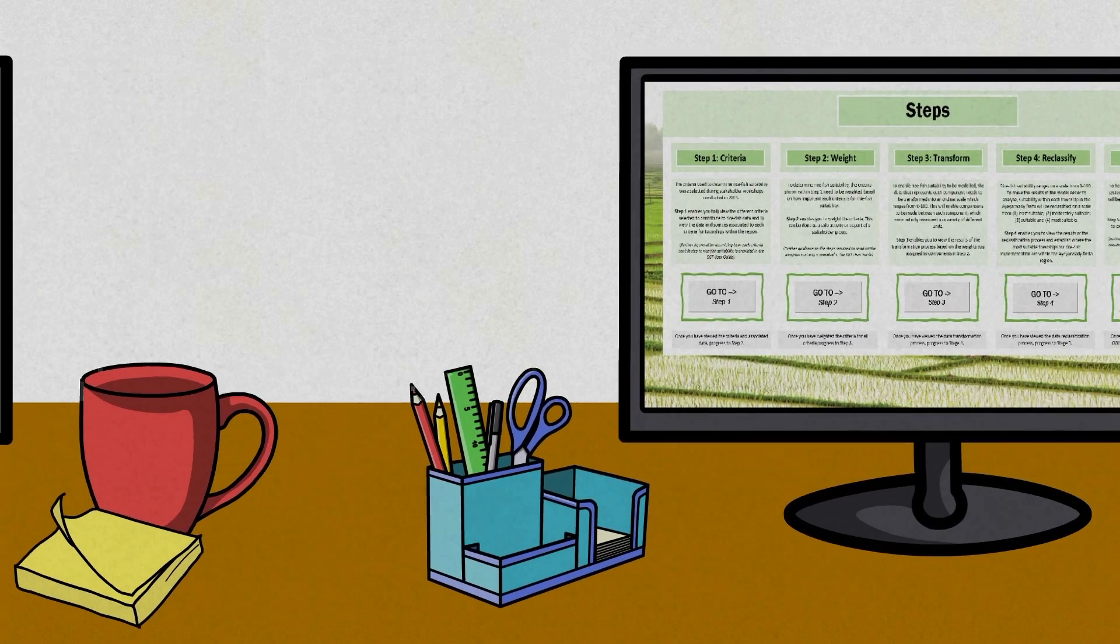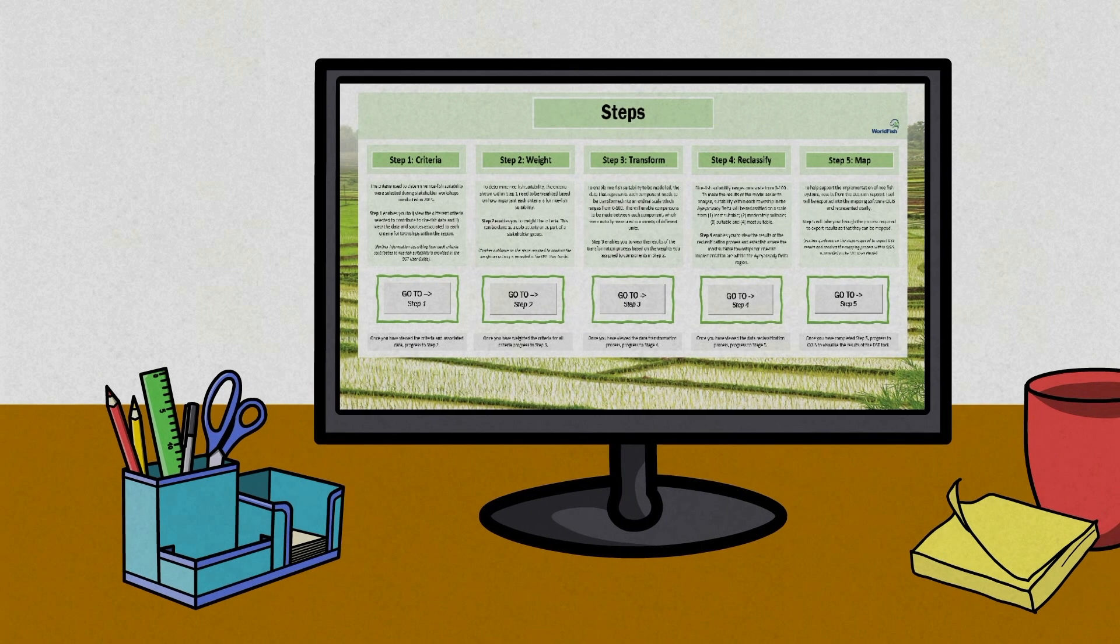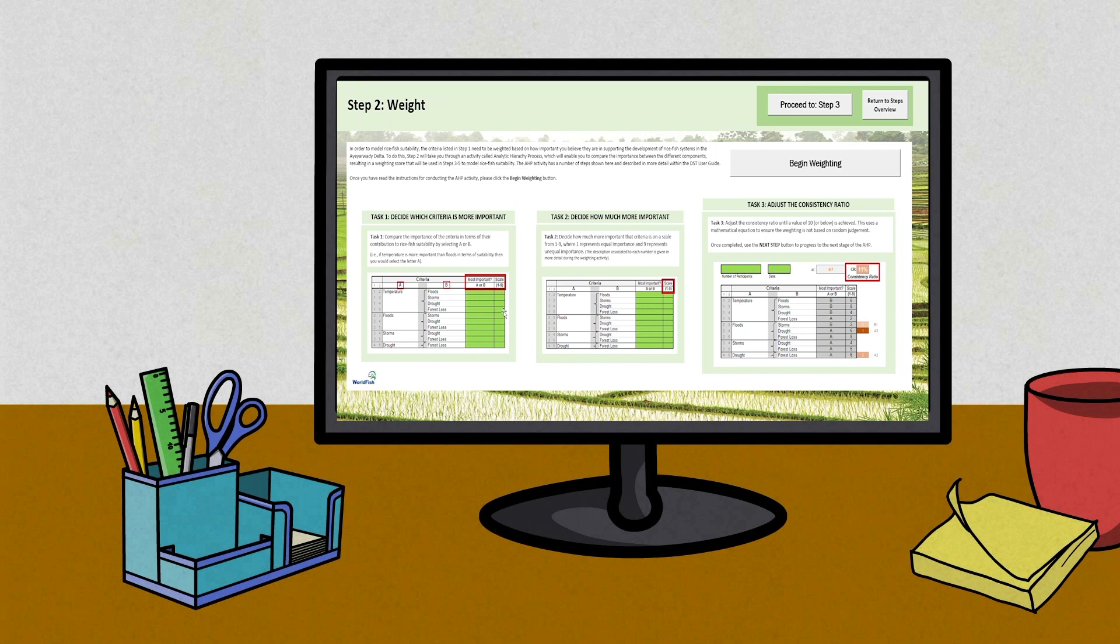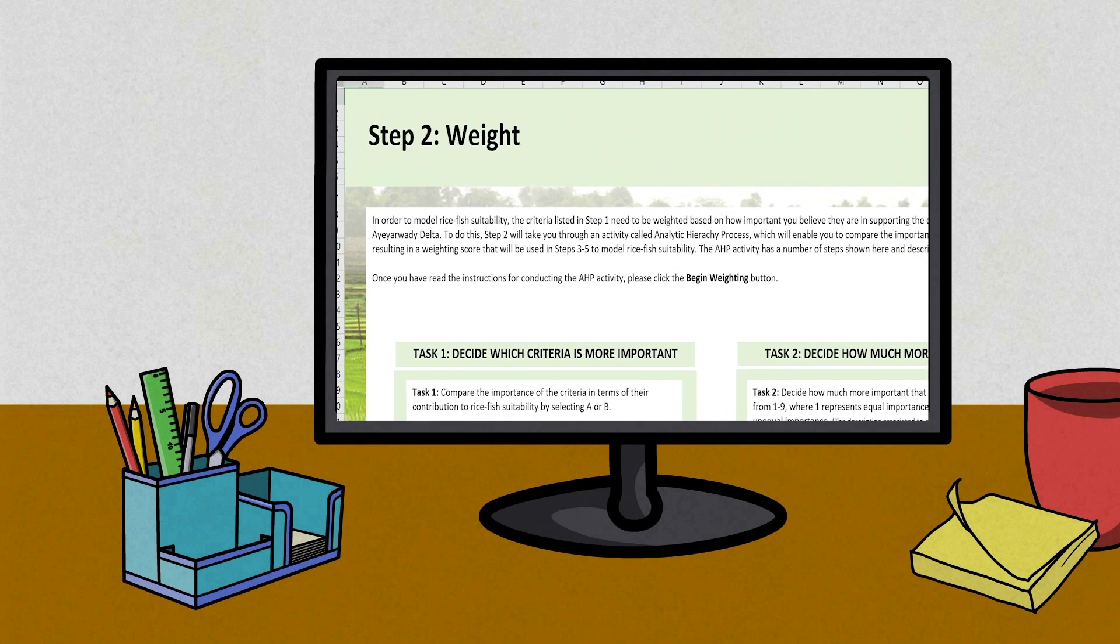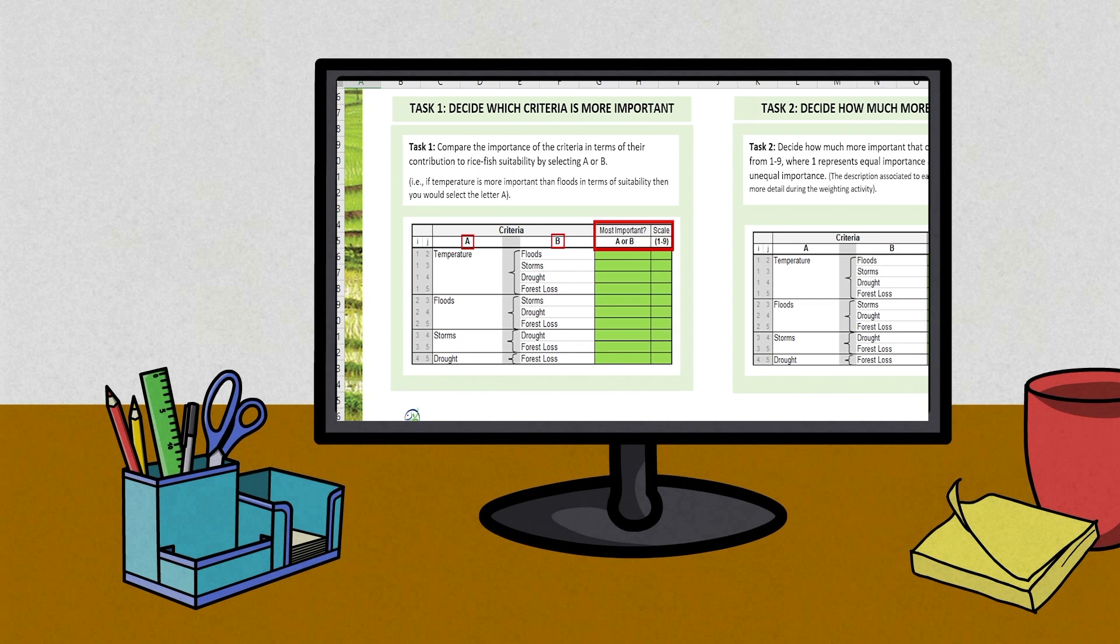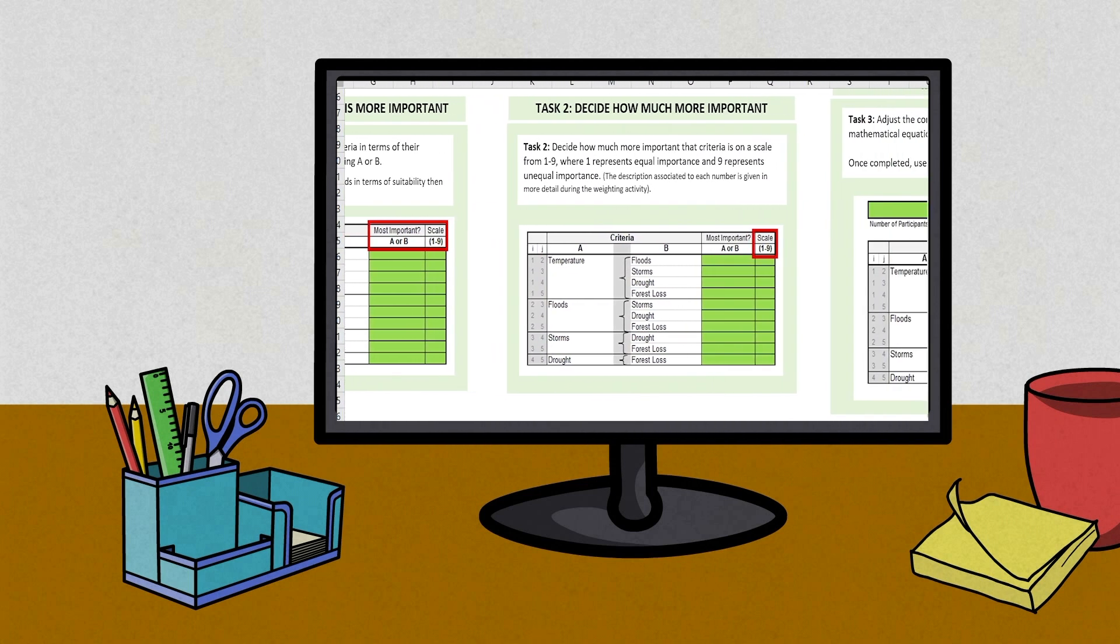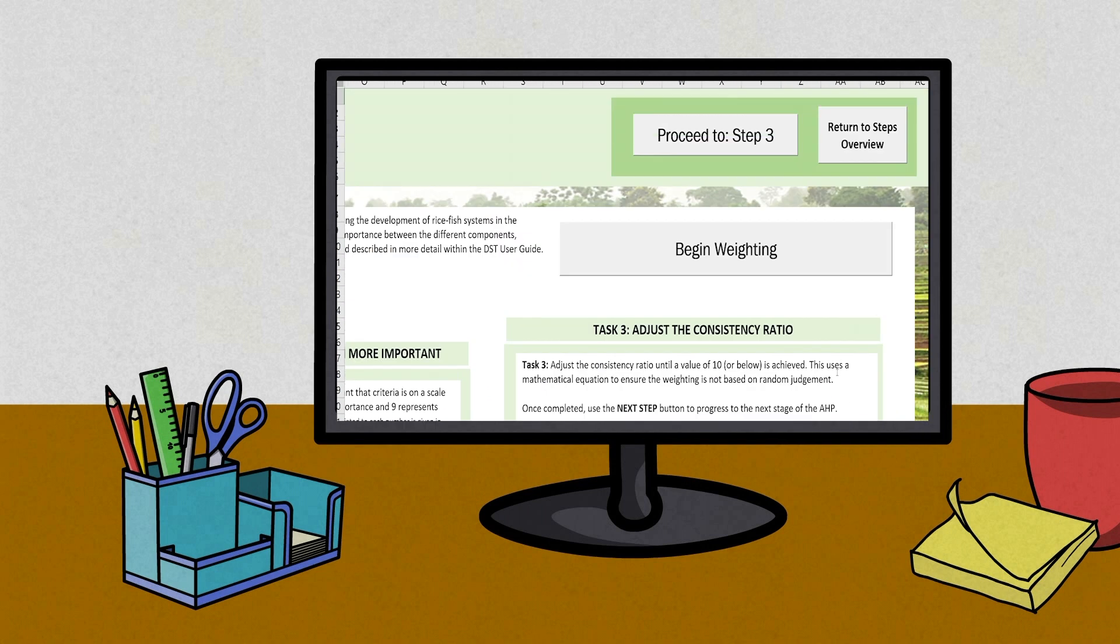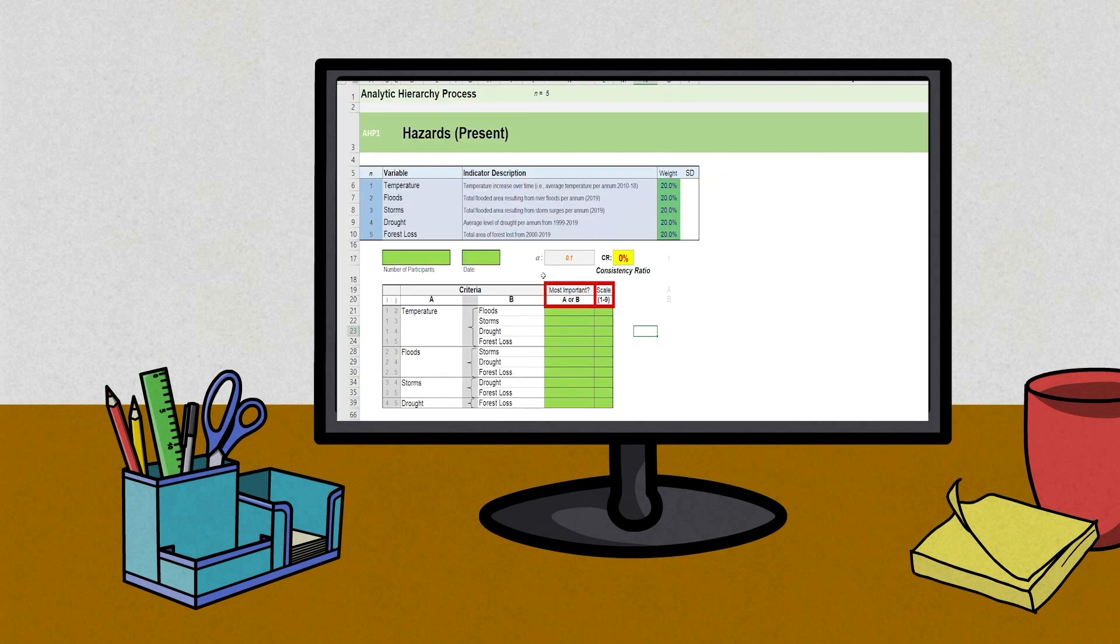Once you've explored this criteria, you can move on to step two. This is where stakeholder input is required as we ask you to weight each criterion based on how important you perceive it to be in relation to suitability in your area given local needs and aspirations. This step uses the analytic hierarchy process to calculate how each criteria interacts to contribute to overall suitability.